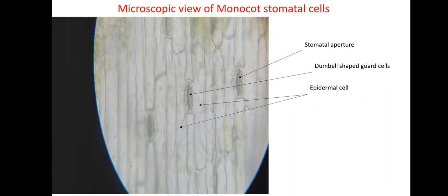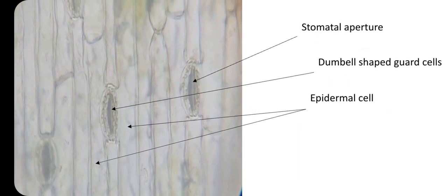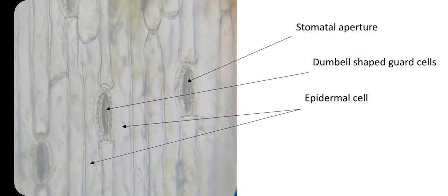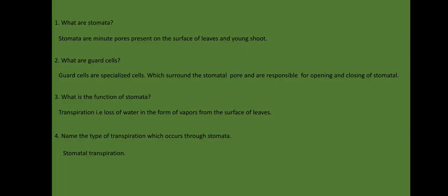The next slide gives the microscopic view of monocot stomatal cells. After preparation of the monocot stomatal cell slide, I magnified it under the compound microscope at 40x magnification and found the stomatal cells are dumbbell-shaped. I zoomed the diagram to show how the dumbbell-shaped cells look. The labellings include the stomatal aperture — through which transpiration takes place — the surrounding epidermal cells, and the dumbbell-shaped guard cells of the monocot leaf.